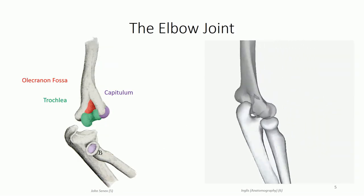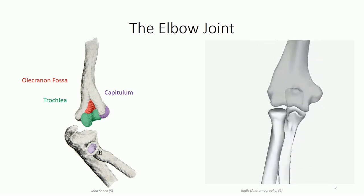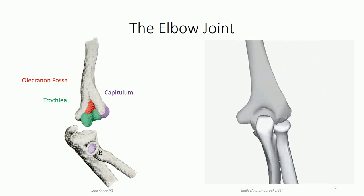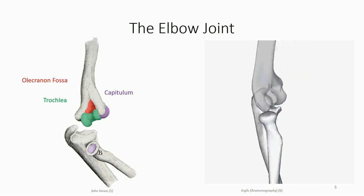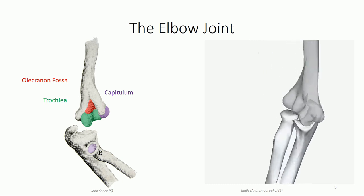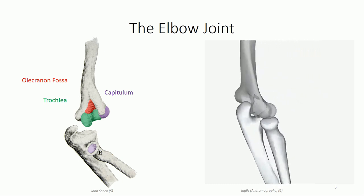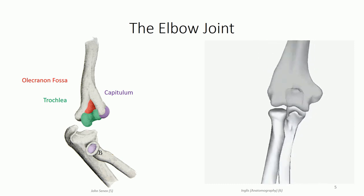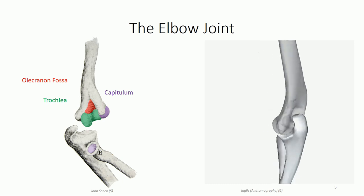Looking at the articulated elbow joint, we can see how all of these bones fit together. The elbow is classified as a hinge-type synovial joint. Similar to the hinge on a door, movement is permitted in a single direction — in this case, flexion and extension. As with any articulation, there is a bit of wobble in what we refer to as joint play, that allows a minute amount of abduction, adduction, and rotation, but these are considered minimal in comparison to the flexion and extension observed.